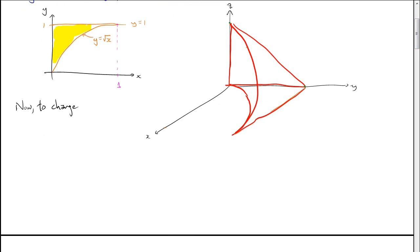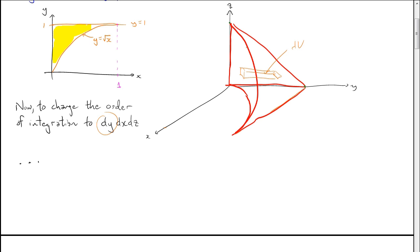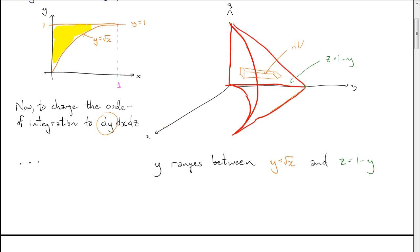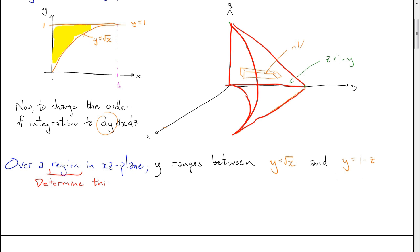Now we want to change the order to dy dx dz. If y comes first, we picture chunks of volume oriented along the y axis. y will range between the curved parabolic wall described by y equals root x and the plane at the top z equals 1 minus y. Solving for y gives y equals 1 minus z. This is true over some region in the xz plane — the shadow of the solid in the xz plane.